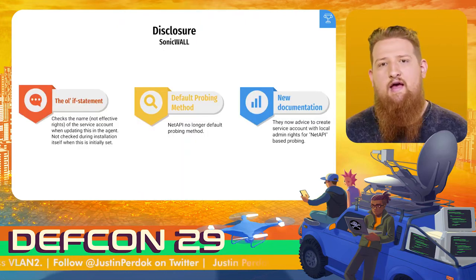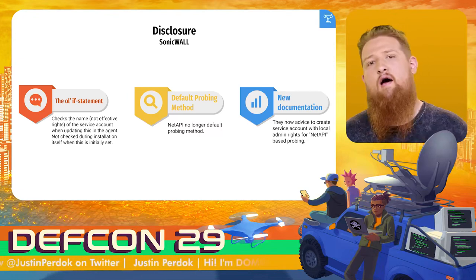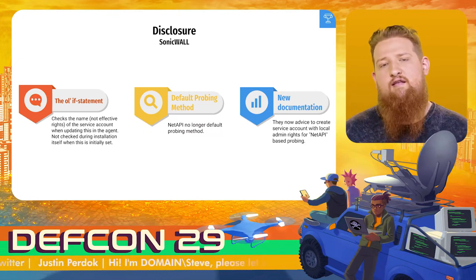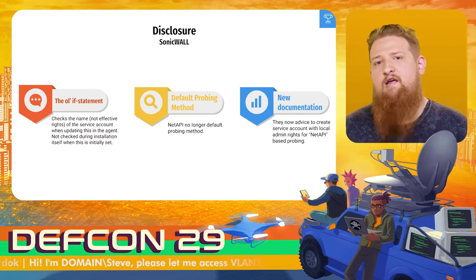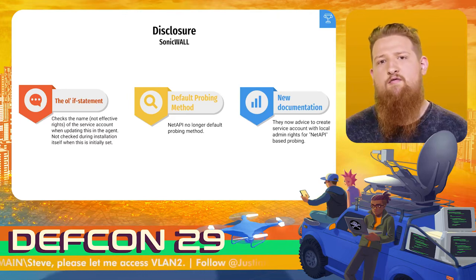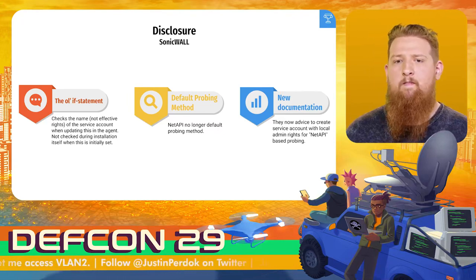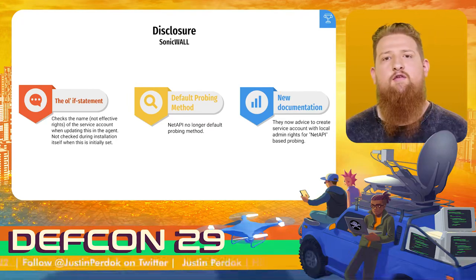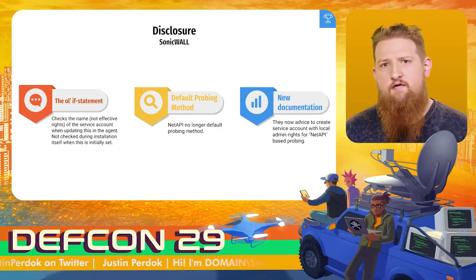I still wanted to figure out what other fixes were implemented beyond the if-statement checking for the username administrator. After installing the agent, I found a couple of things. The if-statement is there, but it only checks if the username is literally called administrator — it doesn't check the effective rights of the user. Meaning if you create a user with domain admin rights, it won't prompt this warning. Besides that, the warning only appears when you configure the service account at a later stage, not during the initial installation. They also changed the default probing method from NetAPI to WMI, and updated the documentation to reference using a local administrator for NetAPI-based probing.